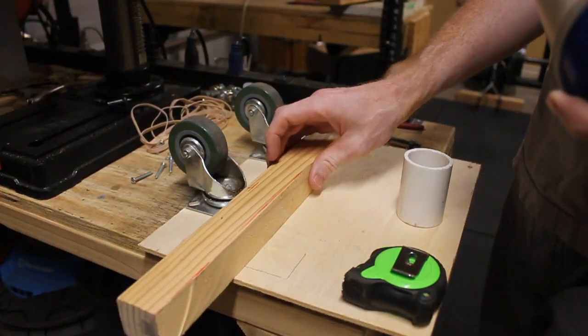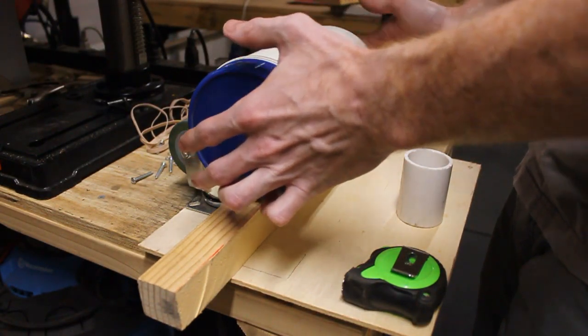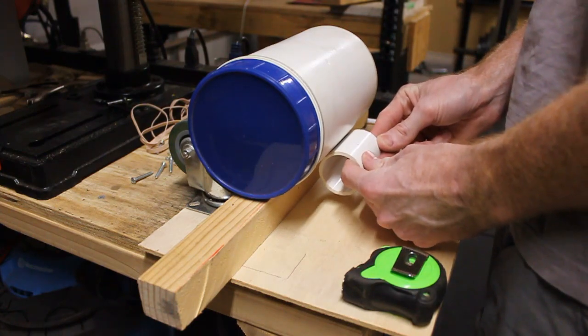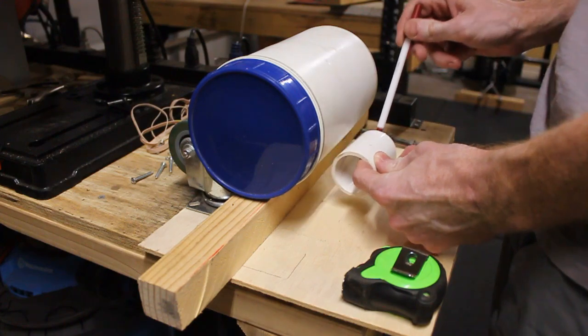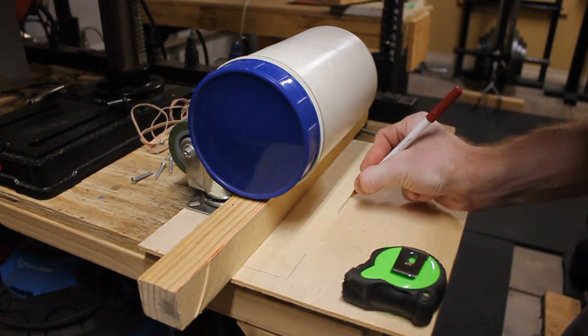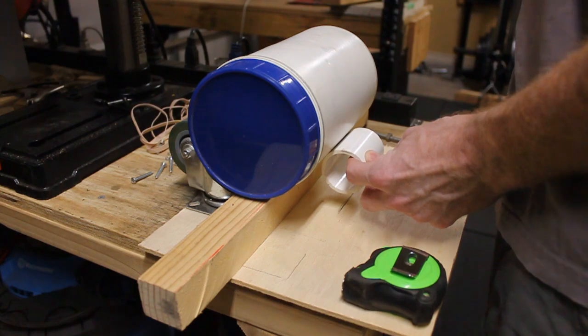So I'll mark out where those are going to go. And then I'll put down a piece of material here so that I can mark out how tall I want the bucket to be sitting. So this is going to give me an idea of where I'm going to put that PVC rider with the pulleys inside of it.